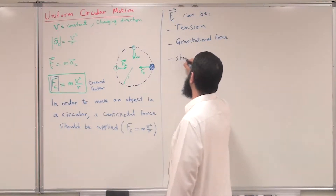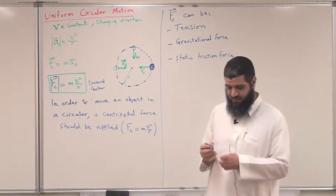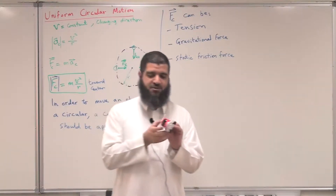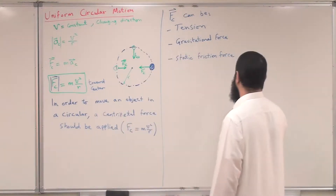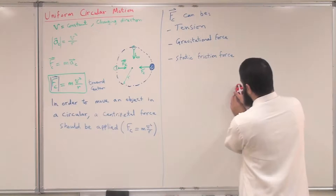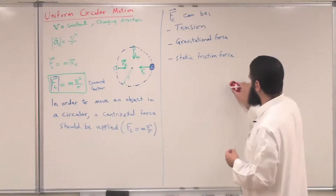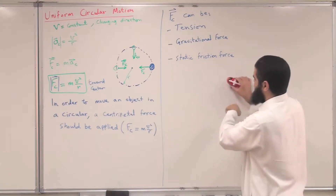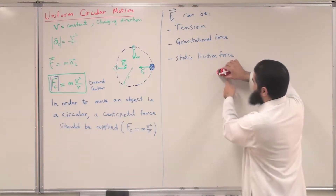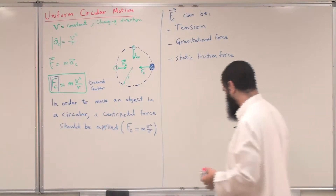Another example is a car moving in a circular path. If a car is moving in a circular path, the force responsible for keeping it in that circular path is the static friction force. We call it static friction because there is no sliding motion outward or inward — the car is moving exactly along the circular path. So static friction prevents the car from sliding off the surface.